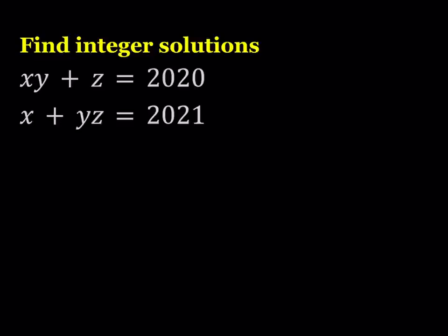Hello everyone, in this video we're going to be solving a system of equations for integer solutions. We have xy + z = 2020 and x + yz = 2021. We're looking for integer solutions, so you can call this a Diophantine system if you want.